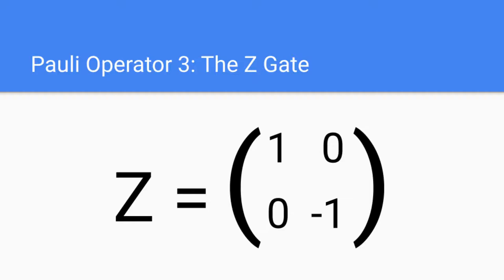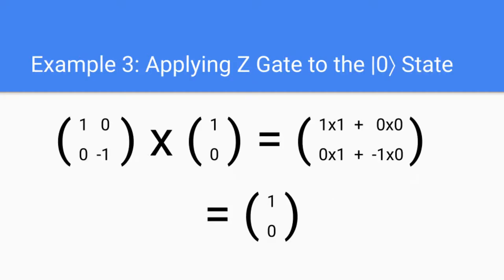It's harder to sum up the Z gate in a few words, so I'll leave that for the recap. Below, we can see the matrix representation for the Z gate. On the top we have a 1 and a 0, and on the bottom we have a 0 and a negative 1, making the Z gate also a 2x2 matrix. The Z gate has effects on the |0⟩ state, the |1⟩ state, the |+⟩ state, and the |−⟩ state, so we'll be taking a look at examples of applying the Z gate to all of these different states.